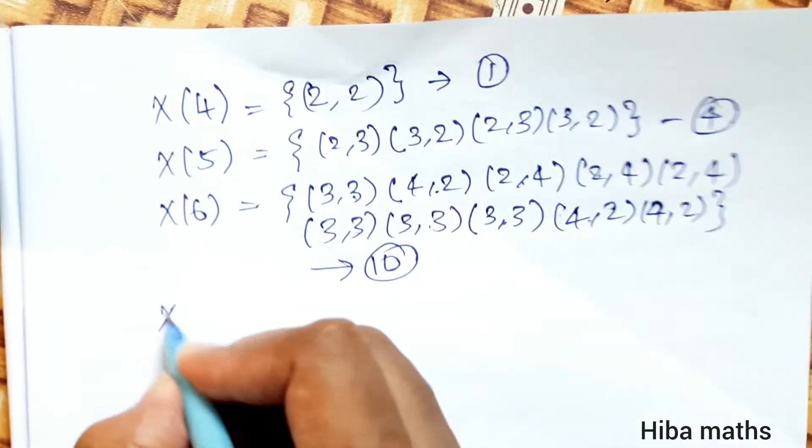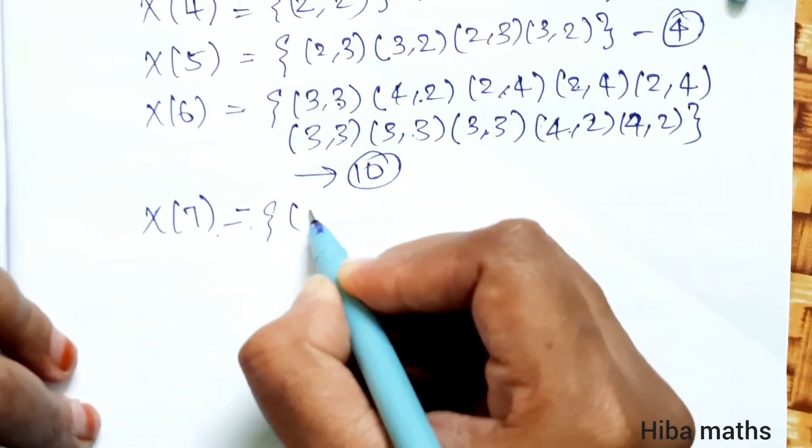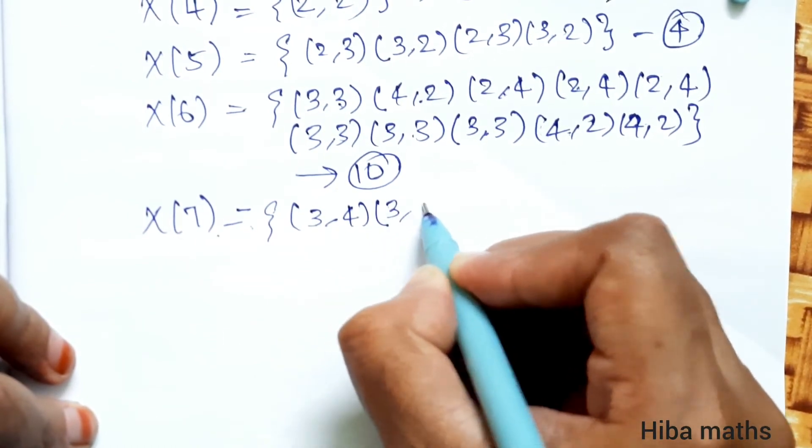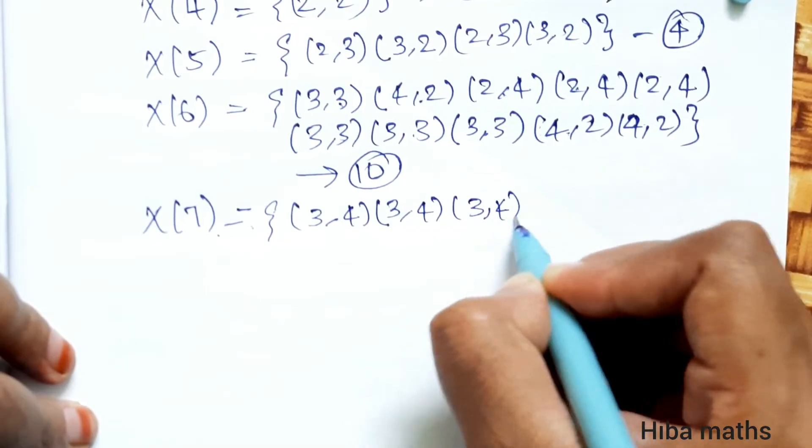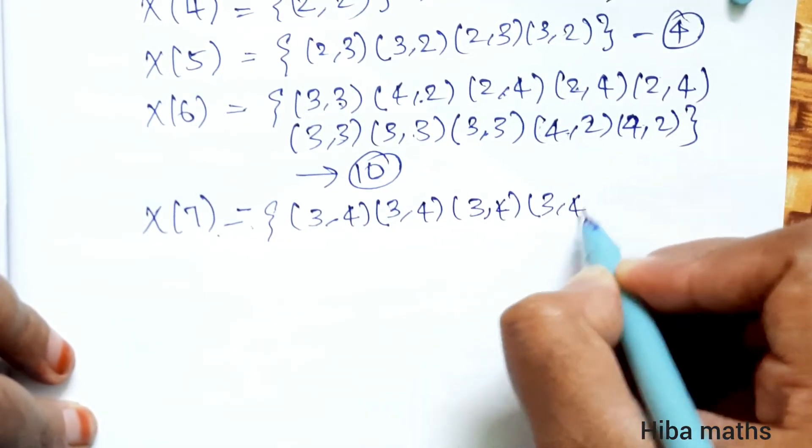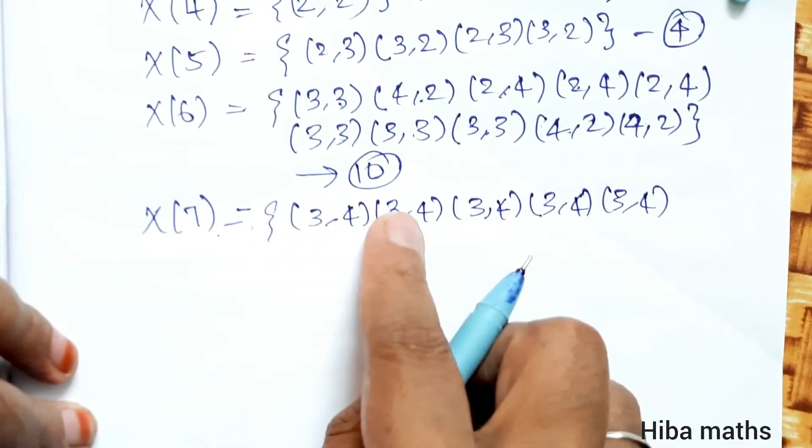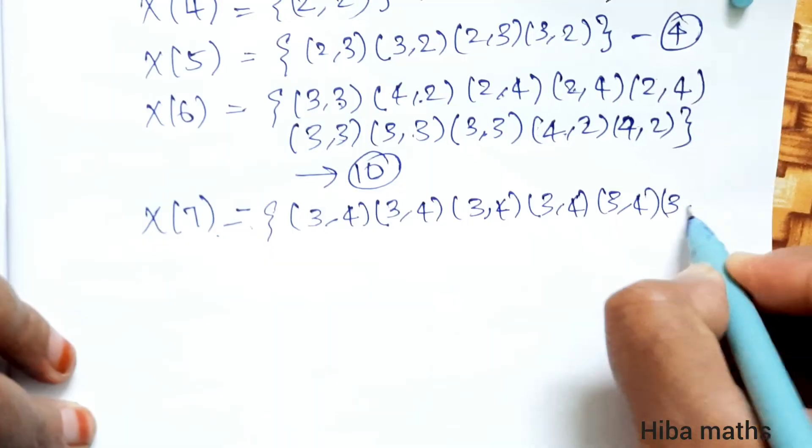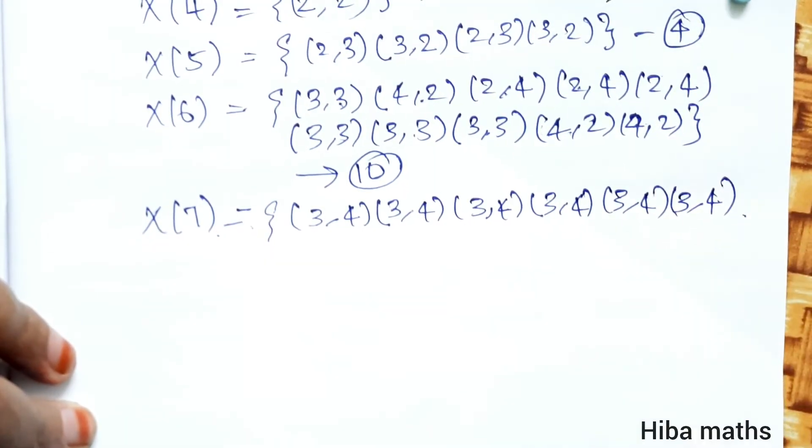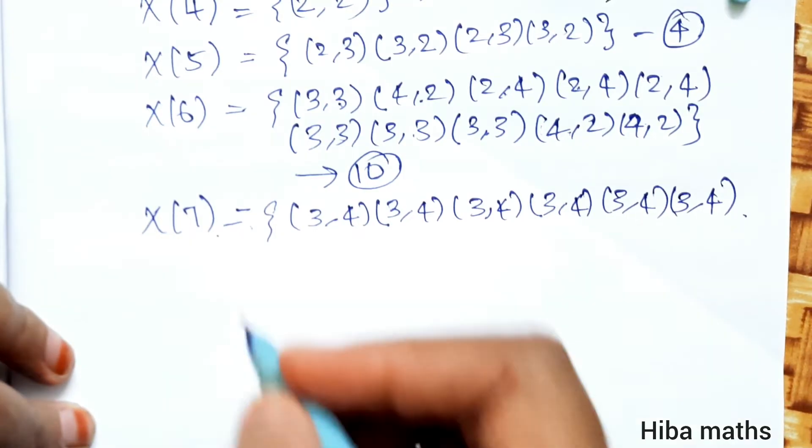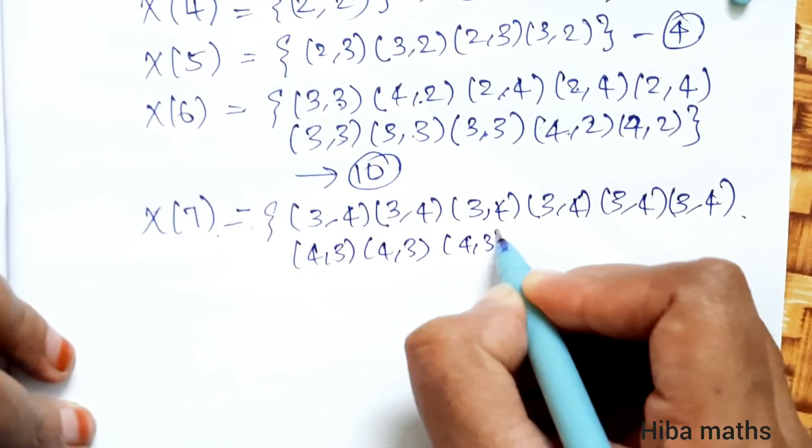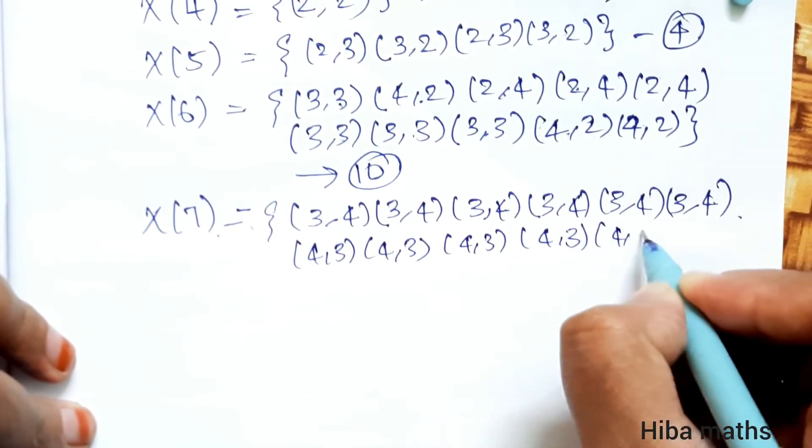X of 7 is 3,4 and 4,3. Counting these combinations gives us 12 total outcomes.